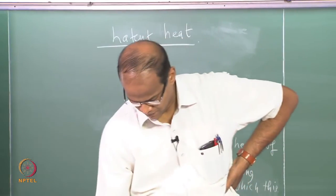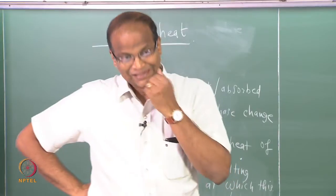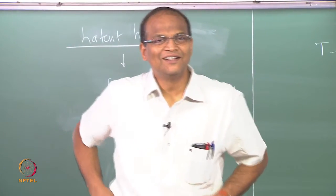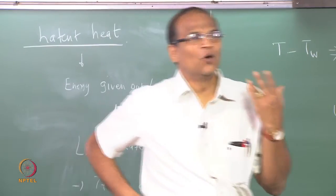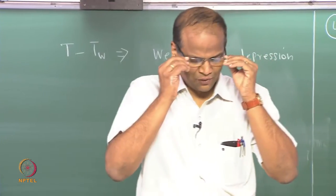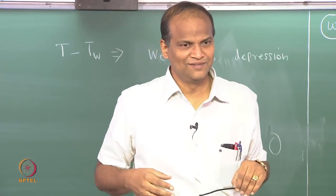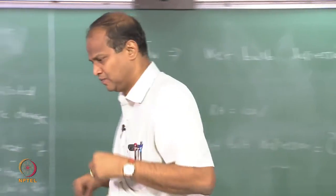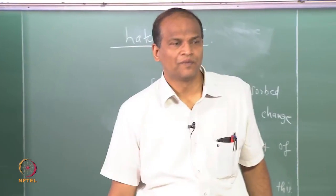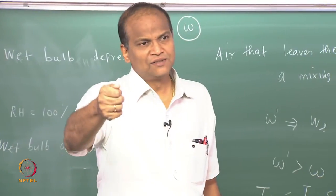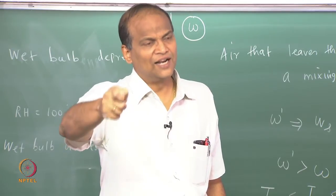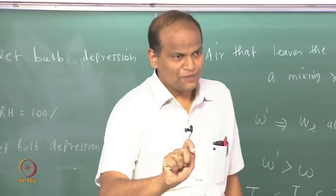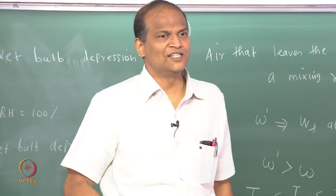For air at 1 atmosphere, the melting point of water — or melting point of ice — is 0 degrees centigrade. If somebody says what is the melting point of ice, you should say it is a stupid question — please tell me the pressure. The melting point of ice at 1 atmosphere is 0 degrees centigrade. If water gets converted to ice or ice gets converted into water at 0 degrees centigrade, the latent heat values are the same. When water becomes ice, it is the latent heat of freezing. When ice becomes water, it is the latent heat of melting.